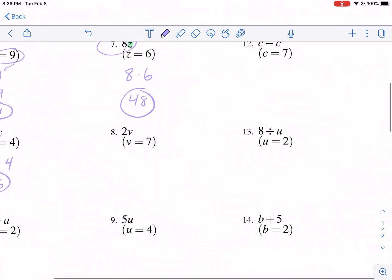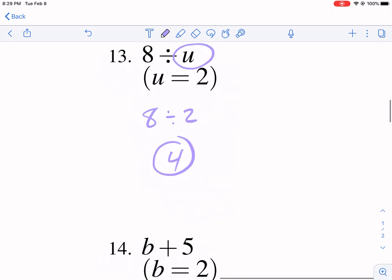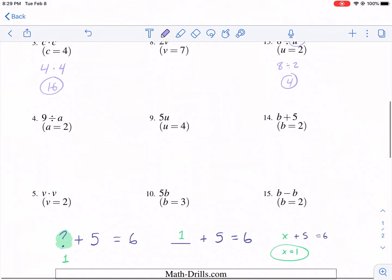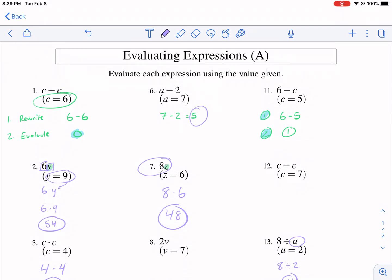So all of these is just the same things even with division. We're going to replace that value. We have 8 divided by 2. And that is equal to 4. And that's it. So it's pretty straightforward once you understand that all you're doing is we're rewriting it and then figuring out the new value.